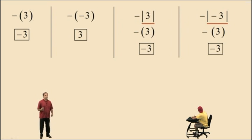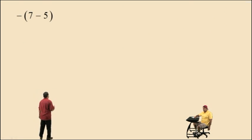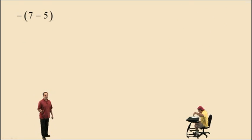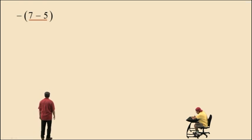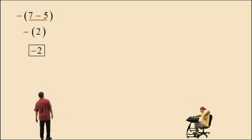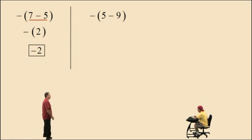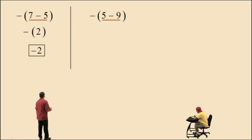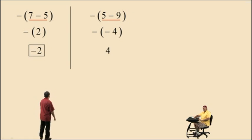Later in the semester, we're not going to say opposite of 3 — we're going to say negative 1 times 3. But for now, we're using the word opposite. Here we have the opposite of the expression 7 subtract 5. Let's simplify what's in the parentheses: 7 subtract 5 is 2. And the opposite of 2 is negative 2. Here we have the opposite of the expression 5 subtract 9. Five subtract 9 is negative 4, and the opposite of negative 4 is positive 4.